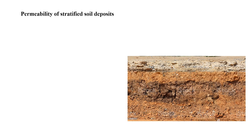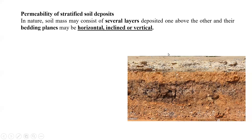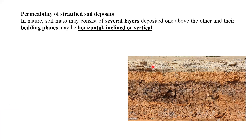Below the ground level, various layers may be available. Let us take one example. You can see this figure. Below the ground level, you can see different layers are there — this is one layer, this is another layer, here is another layer, and here also one new layer is there. So different layers are present.